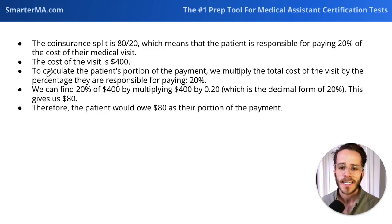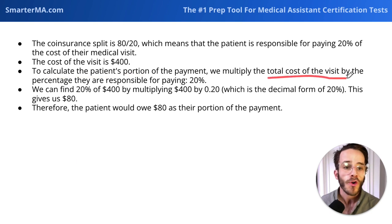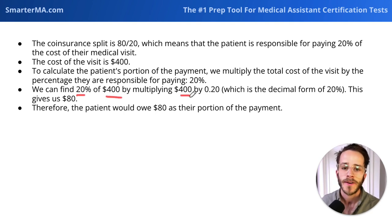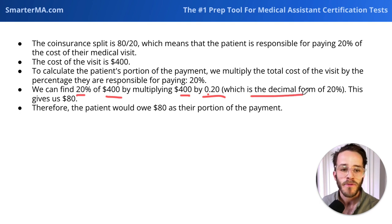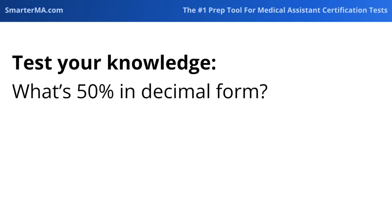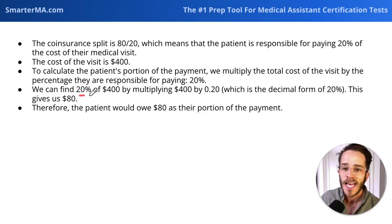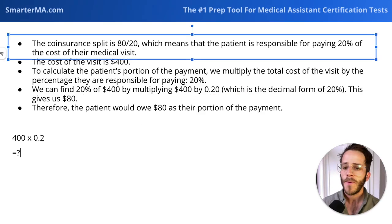In order to calculate the patient's portion of the payment, we're going to multiply the total cost of the visit by the percentage they're responsible for, which is 20%. We can find 20% of $400 by taking $400 and multiplying by 0.2, because 0.2 is the decimal form of 20%. Similarly, if we had 50%, that would be 0.5. In this case, we have 20%, so we multiply by 0.2.